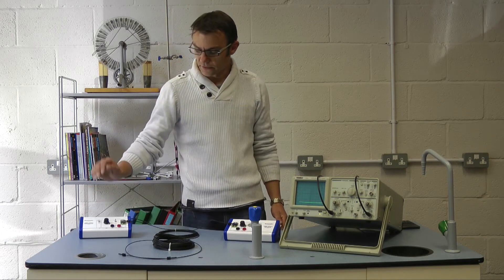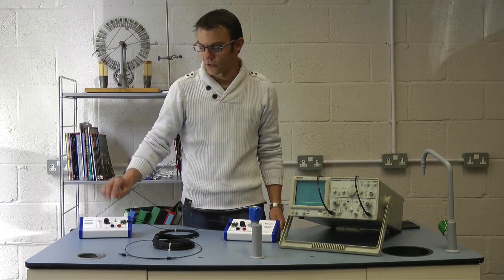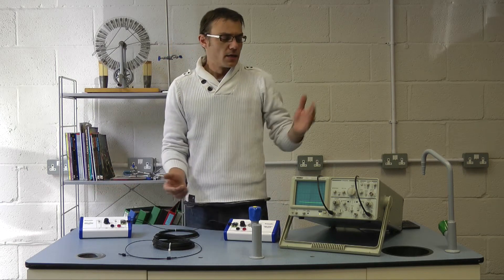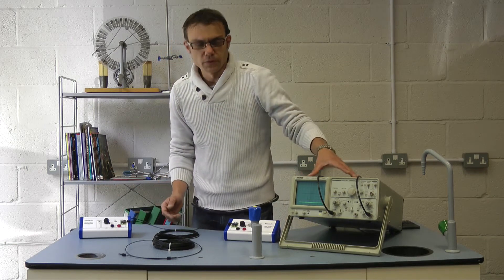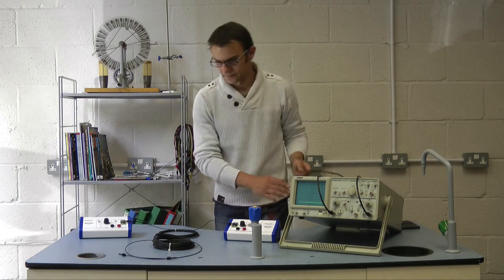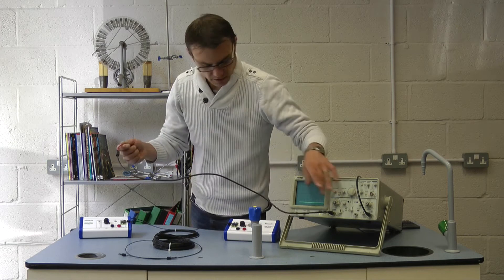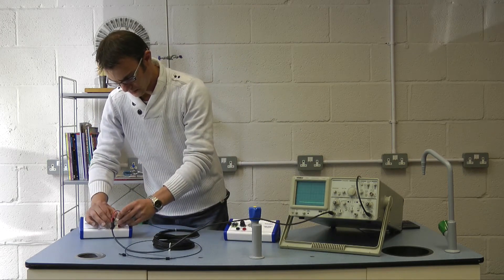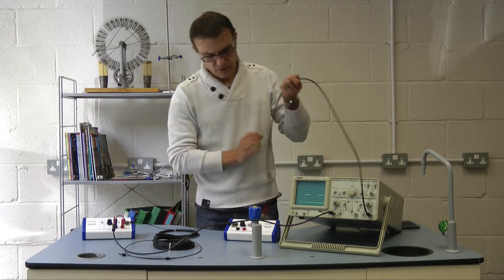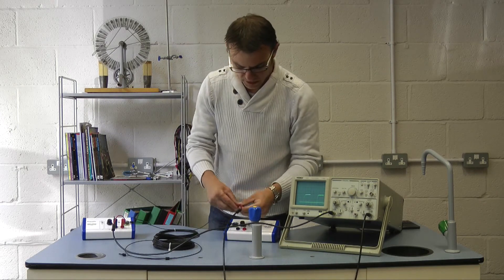I'm going to switch the frequency of the signal produced by this from the audio range up to one megahertz, which means it gives us a measurable time difference on the scope at the sort of speeds we're looking at. I'm going to monitor on channel one of the scope the output from the transmitter and on channel two of the scope I'm going to monitor the output from the receiver.